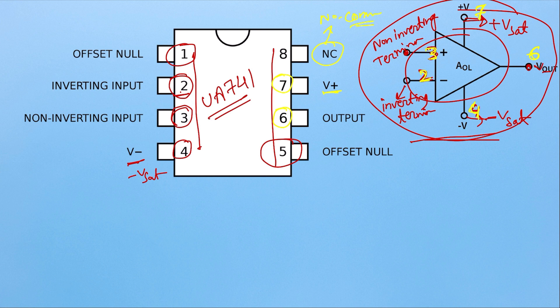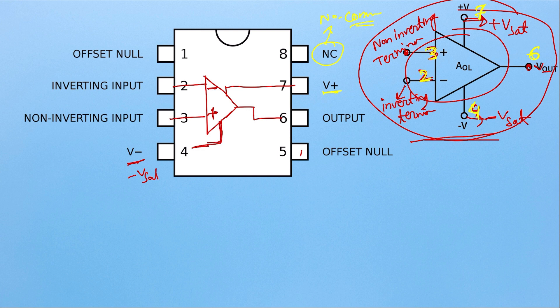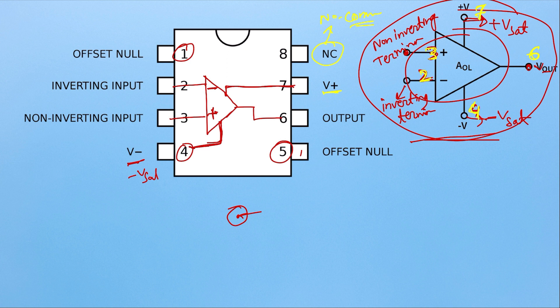This is the IC of the op amp and its pin configuration. Inside this chip, the op amp will look like a triangle with the inverting and non-inverting inputs marked. For the offset null, what we do is use a potentiometer of 1K — we use pins 1, 4, and 5 and adjust the potentiometer to make the offset null zero. I will discuss what is offset null in a separate video.